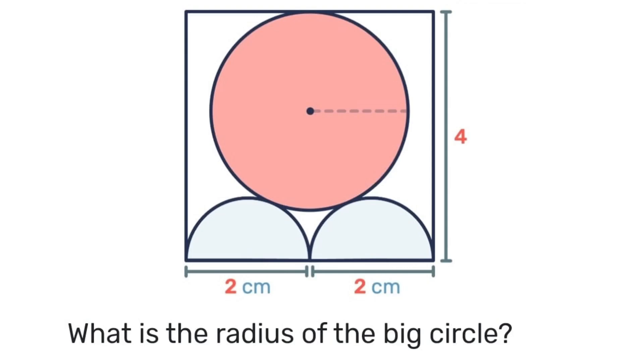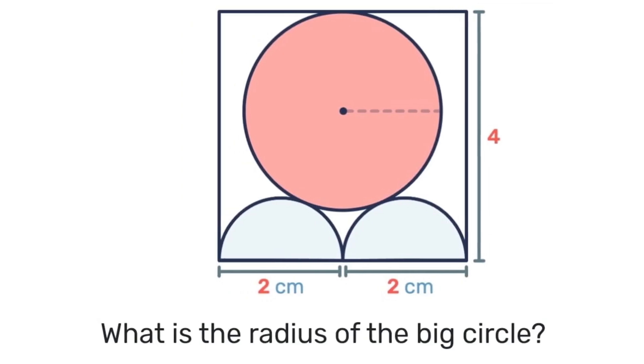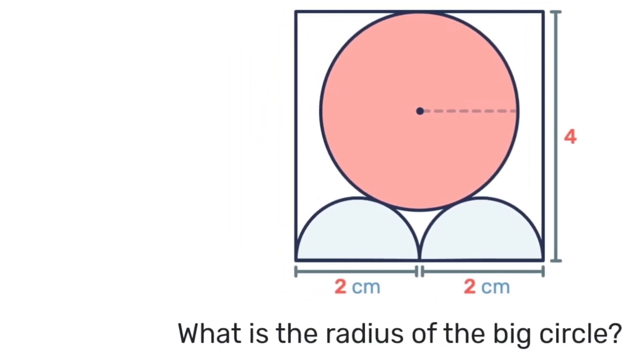Pause the video here, give it a try, and see what you come up with. I'm going to solve it this way. I'll begin by making some construction lines. For example, we know that this is the radius r. By definition, that's the distance from the center of the circle to any point on the circle. If that is r and the whole distance there is 4, then this distance will be 4 minus r.